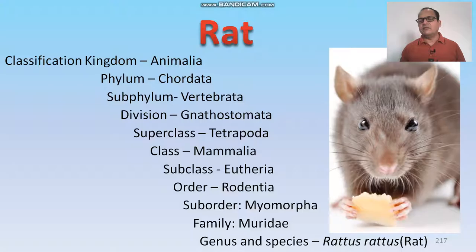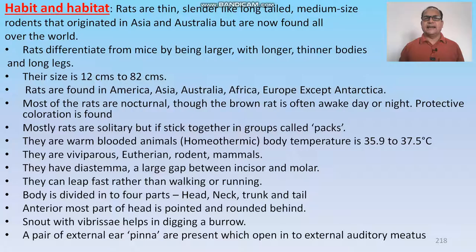Kingdom Animalia, Phylum Chordata, Subphylum Vertebrata, Division Gnathostomata, Superclass Tetrapoda, Class Mammalia, Subclass Eutheria, Order Rodentia, Suborder Myomorpha, Family Muridae, Genus and Species Rattus rattus. Rats are thin, slender, long-tailed bodied animals.